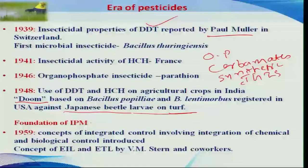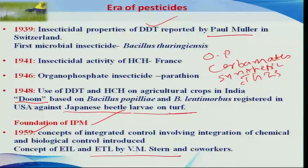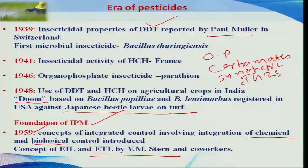The widespread use of chlorinated hydrocarbons and organophosphorus compounds created one foundation for integrated pest management. During 1959, V.M. Stern and his associates implemented the integral control of pest management through integration of chemical and biological control, called integrated control. This was well illustrated by suppressing the cotton boll weevil, one of the important pests in the cotton ecosystem. He also introduced the important concepts of EIL and ETL, which are the base for the development of IPM.